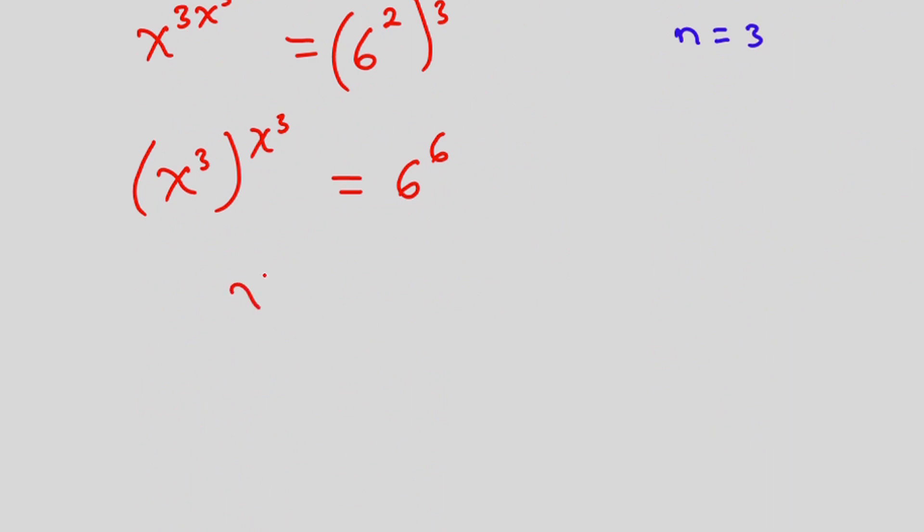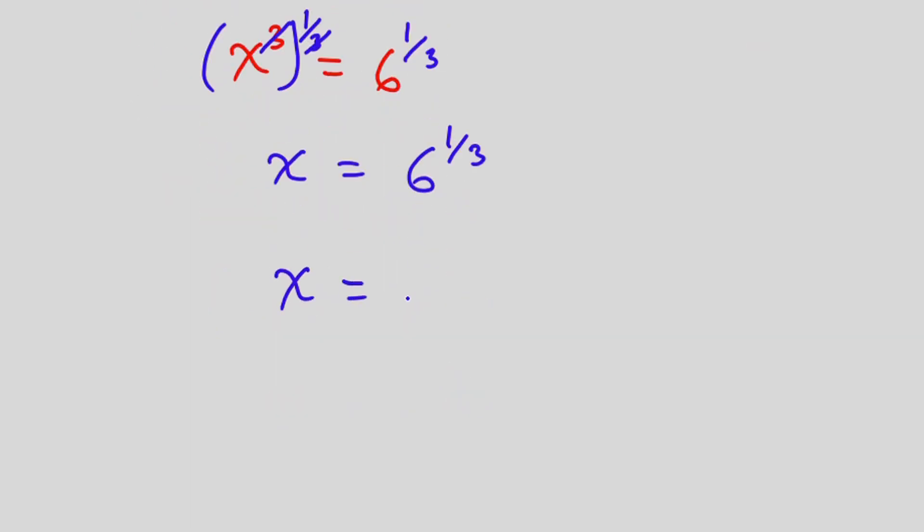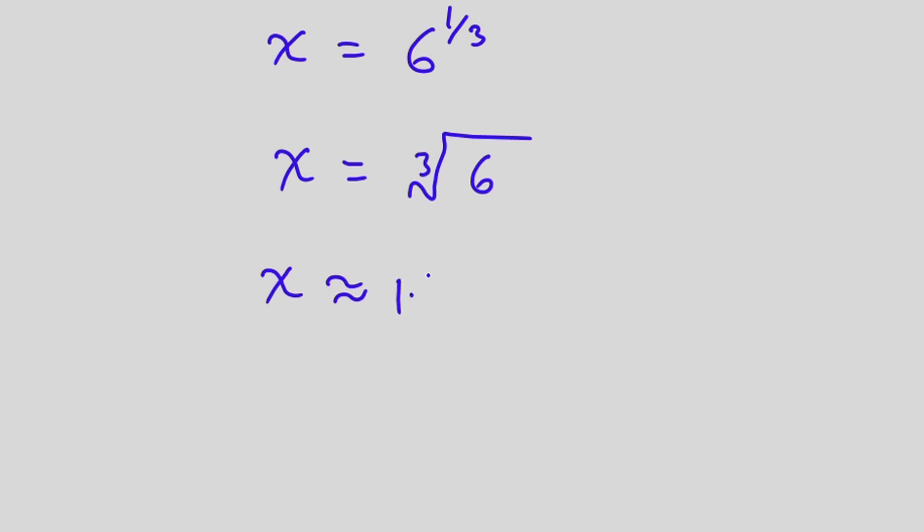Then from here we're going to raise each side of the equation to the power 1 over 3. The reason is that we want this 3 to cancel, so that we get x equals 6 to the power 1 over 3, which could be written as x equals the cube root of 6. If you use a calculator for this, you get x approximately equal to 1.8177.